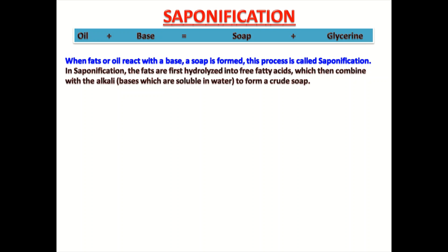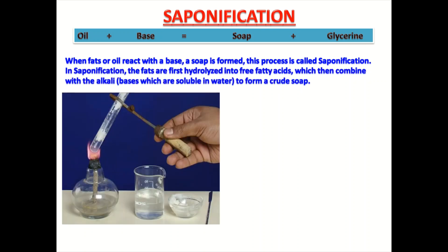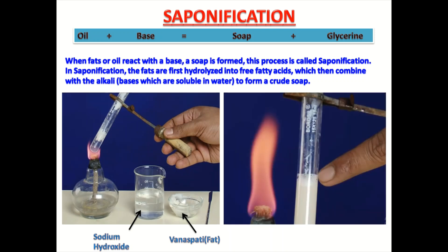Let us take an example. Here, sodium hydroxide and vanaspati are combined in a test tube and the test tube is heated. Then we get this solution — here you can see in the test tube, after heating, it has a frothy mixture, that is, soap is formed.